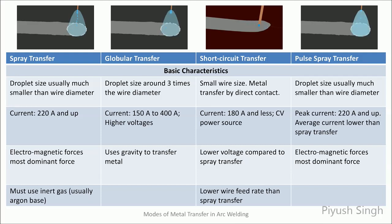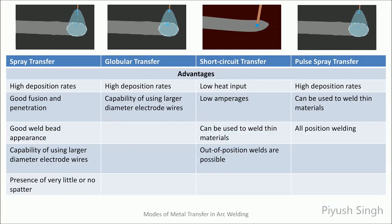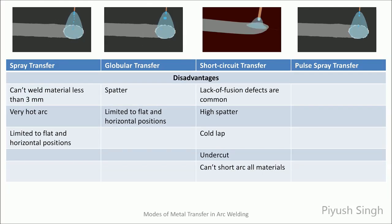In case of globular transfer, it is gravitational force, while in short circuit transfer, it is surface tension which detaches the droplet from the wire into the weld puddle. Spray transfer gives the highest deposition rate with good penetration and bead appearance due to absence of spatter. Short circuit and pulse spray can be used for out-of-position welds and also for welding thinner materials. Short circuit transfer takes place at low current values and as a result, there is less heat input during the weld. Spray and globular transfer cannot be used to weld thin materials and are limited to only flat and horizontal positions. Short circuit transfer sometimes results in cold lap and lack of fusion defects. High spatter is a common issue for both globular and short circuit transfer.